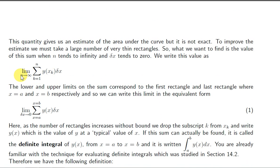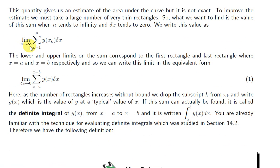We can imagine making the number of rectangles increase indefinitely — let n tend towards infinity — and we will get a better and better approximation to the area under the curve. But letting n tend towards infinity means that the width delta x has to decrease if those rectangles are to fit under the curve. So, this limit is actually equivalent to taking the limit as delta x tends towards 0.